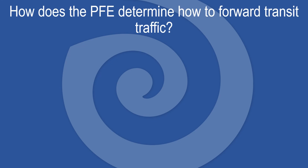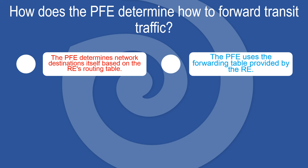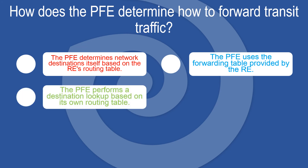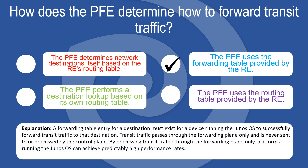How does the PFE determine how to forward transit traffic? The PFE uses the forwarding table provided by the RE. A forwarding table entry must exist for a destination for the device to successfully forward transit traffic. Transit traffic passes through the forwarding plane only and is never sent to the control plane, enabling predictably high performance.